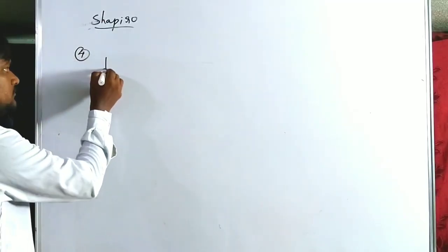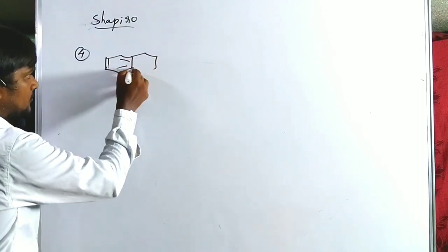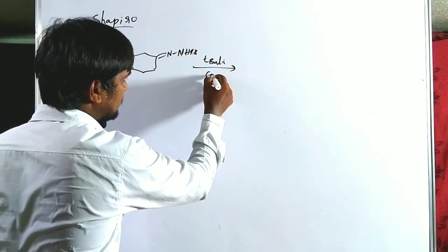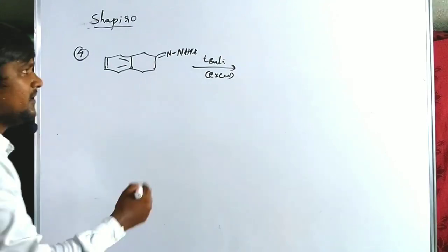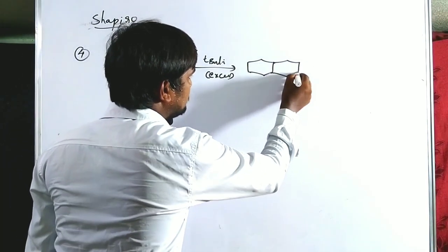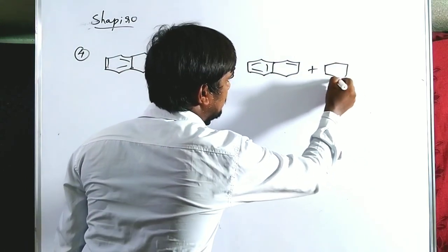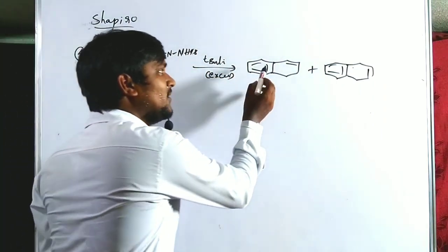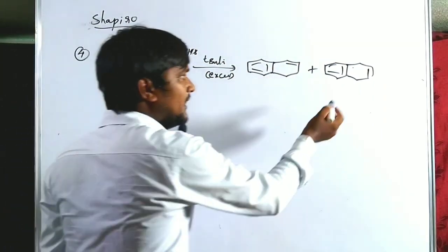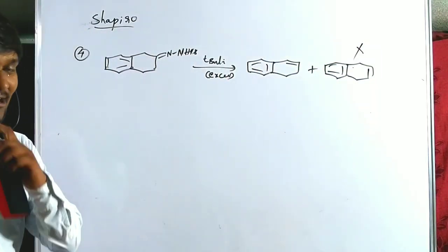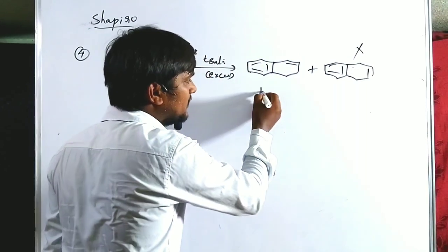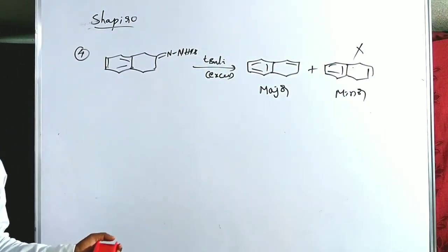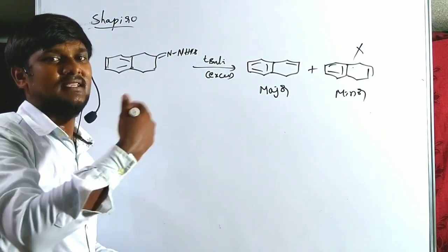In the fourth example, the tosyl hydrazone is treated with excess t-butyllithium. Two types of double bond formation are possible. One product forms large conjugation with the benzene ring, stabilizing it via resonance — this is the major product. The other does not participate in conjugation with the benzene ring and is therefore the minor product. Conjugation/resonance stabilizes the major product.